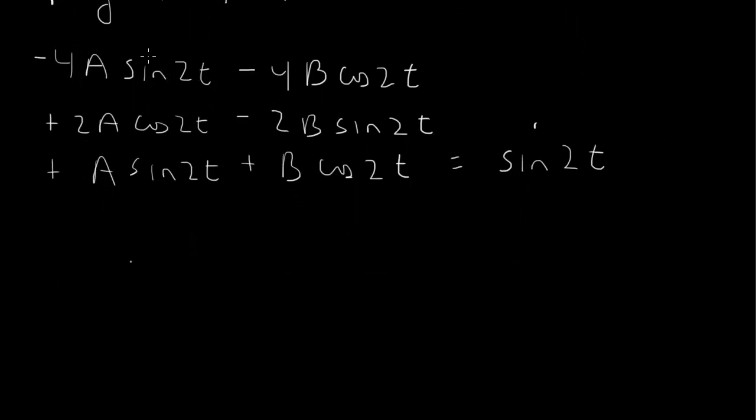So we collect terms here. So let's collect the sine terms. So minus 4a minus 2b plus a. So minus 4a plus a is minus 3a, and then minus 2b. And those are the sine 2t terms.